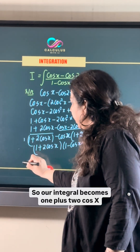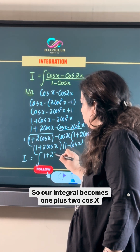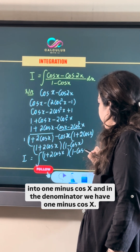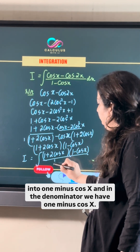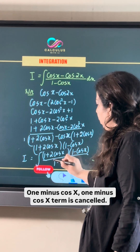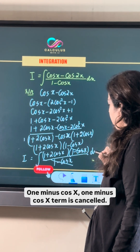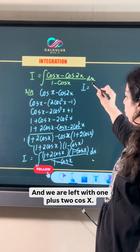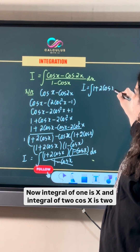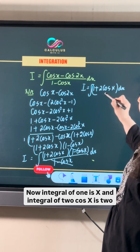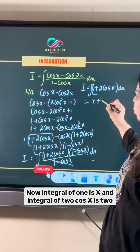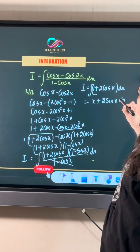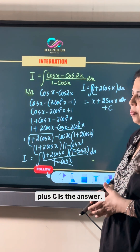Our integral becomes (1 plus 2cos x)(1 minus cos x) divided by (1 minus cos x). The (1 minus cos x) terms cancel, and we are left with 1 plus 2cos x. The integral of 1 is x, and the integral of 2cos x is 2sin x, so the answer is x plus 2sin x plus C.